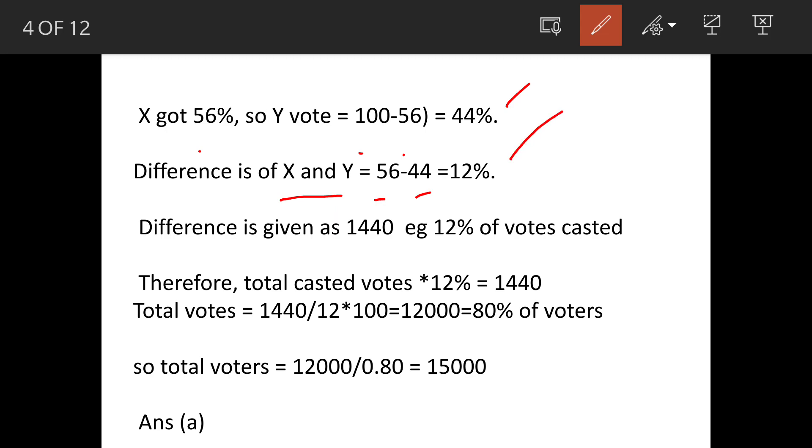Now this 12% is equal to 1440, because X won the election over Y by 1440 votes. So this 1440 is actually 12% of the total votes cast.